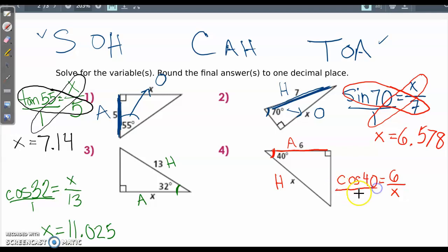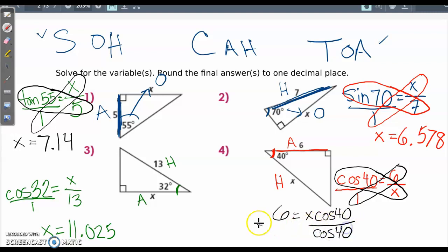Now I'm going to set a proportion up again and solve just like I did before. Cross multiplying 6 times 1 and then cosine 40 times x. This is a little bit different. You have one more step to do. 6 times 1 is 6 and that's going to be equal to cosine 40 times x. I'm going to leave that as x cosine 40. In order to isolate x and get x by itself, you're going to have to divide both sides by cosine 40. When you do that you get x to be 7.833.